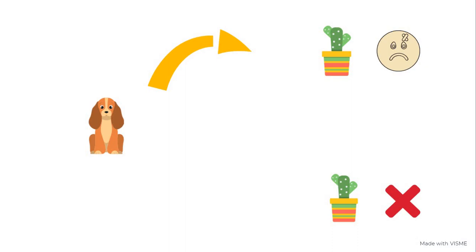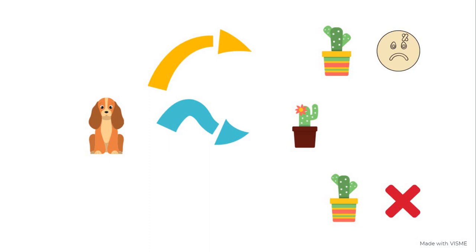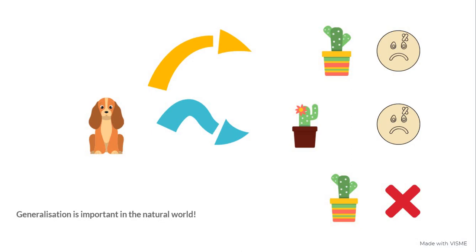But if there is no generalization — if the dog only memorizes that this specific plant with this particular appearance and these number of branches is harmful — and then sees another cactus with a quite different appearance, then in the lack of generalization it might prospectively end up doing the same to the new cactus and getting hurt. This is something that doesn't happen in nature, and generalization is an important part of learning in a natural setting.